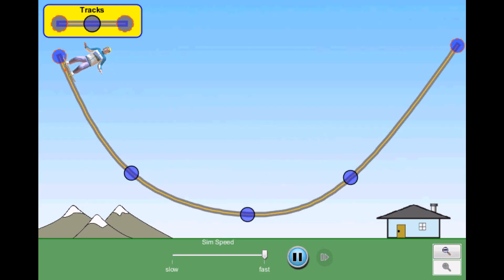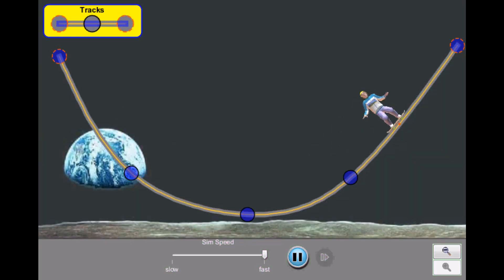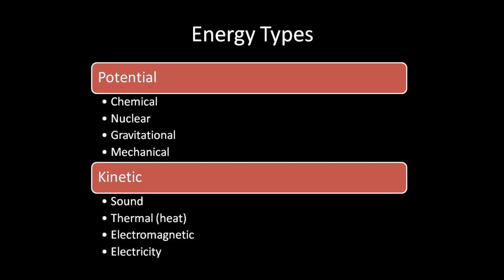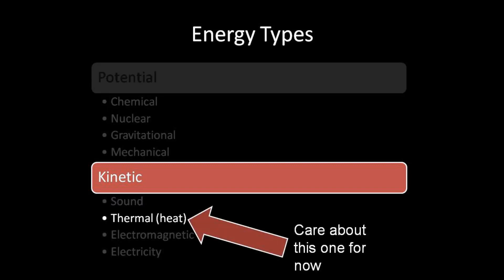Part 2 of this video includes how energy changes from one form to another. You cannot destroy or create energy. This is also known as the conservation of energy. Energy can change into many different forms to do work. The main two categories being potential energy and kinetic energy, which can then be separated into other subcategories.